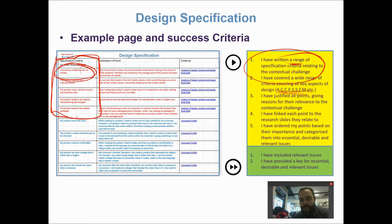When planning or undertaking my research, I consider all the ACCESS FM criteria: Aesthetics, Cost (which might be a restraint on the project), Consumer, Environment, Safety, Size, Function — which I'd say is one of the key areas — and Materials and Manufacture. It's important to use these key criteria to refine your specification and make sure you don't forget anything. You'll likely cover ACCESS FM during the research phase anyway, so it shouldn't come as a surprise when you reach the design specification.